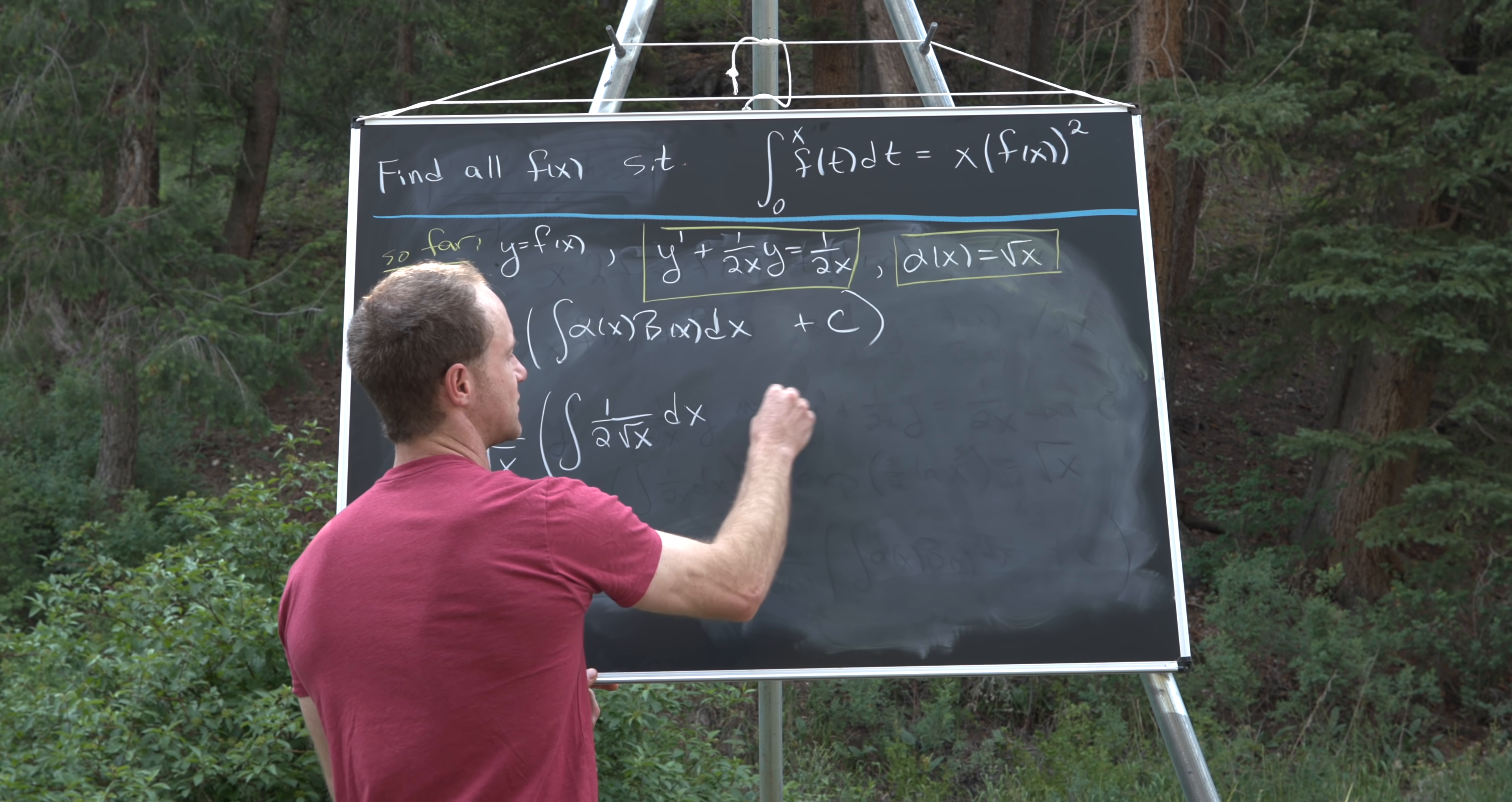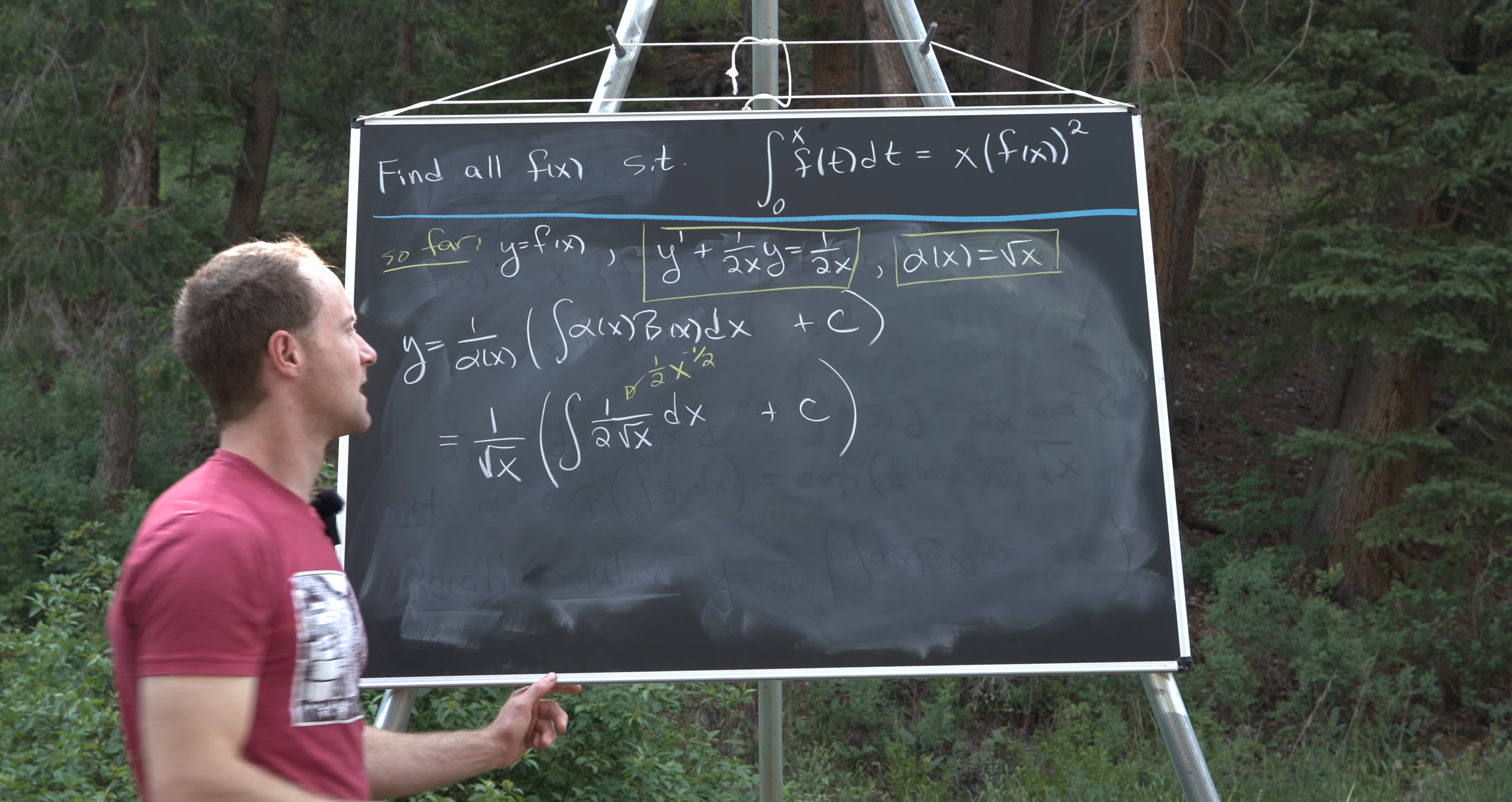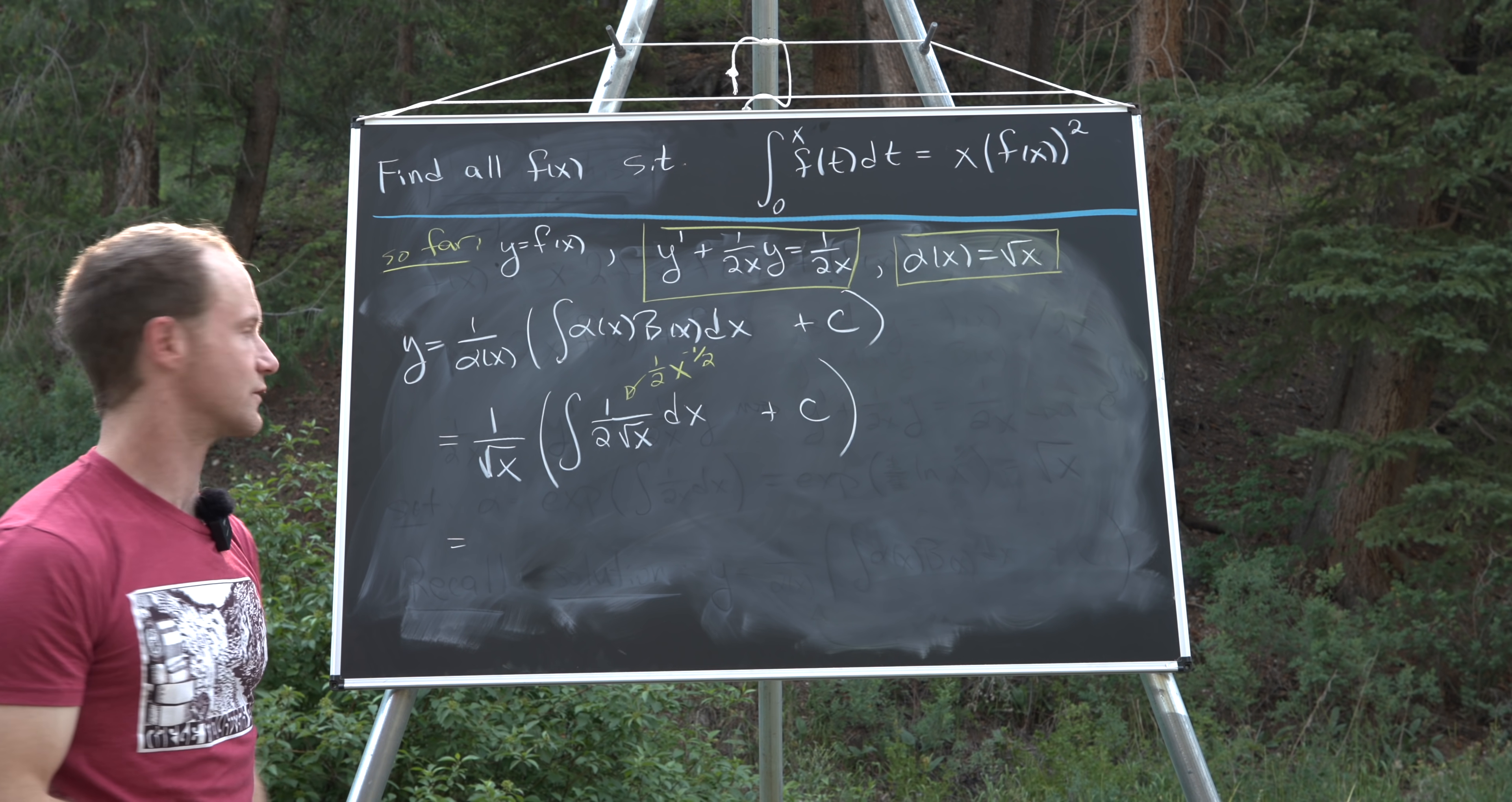Okay, then we have dx plus our constant. But now looking at this, this is equal to one half x to the minus one half. And so that's just really set up for using the power rule for an antiderivative. The antiderivative of that would be the square root of x.